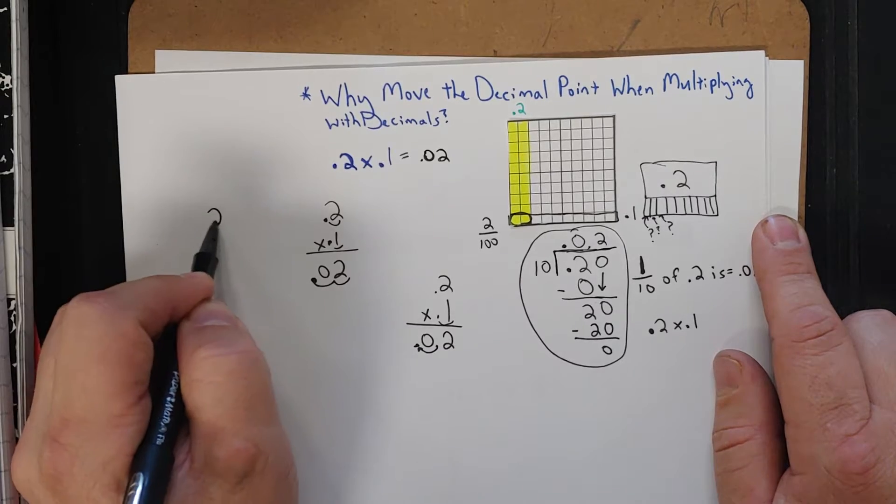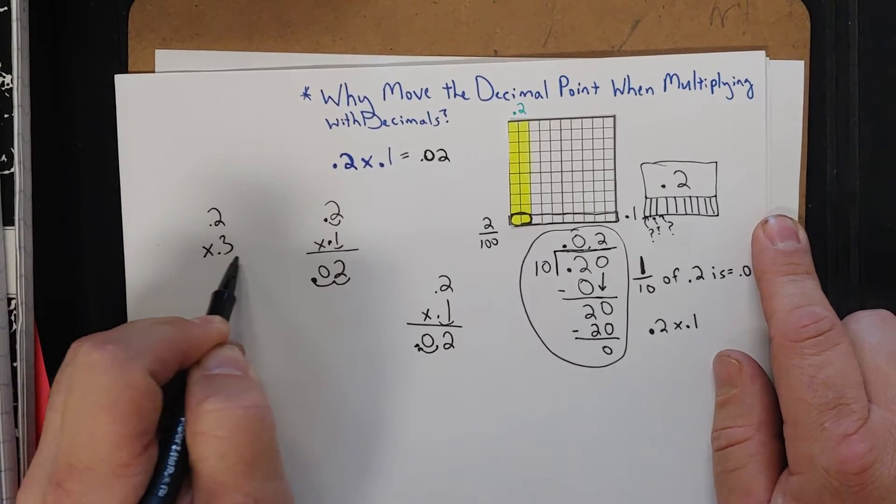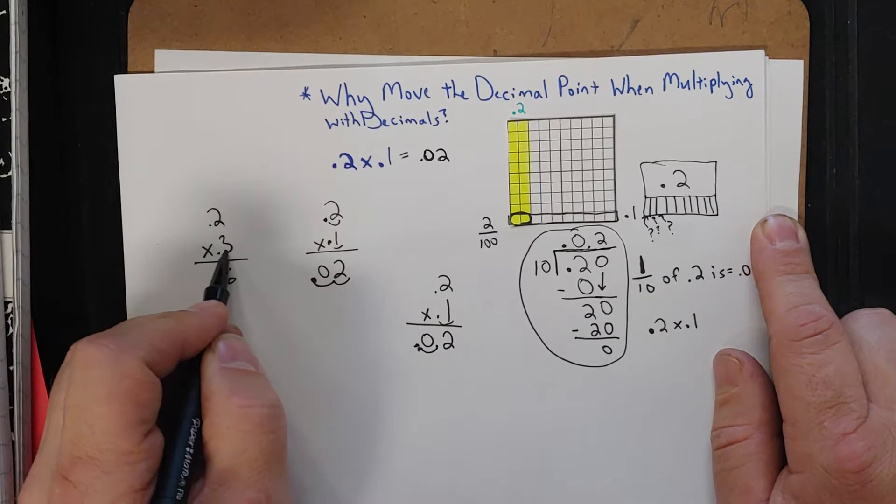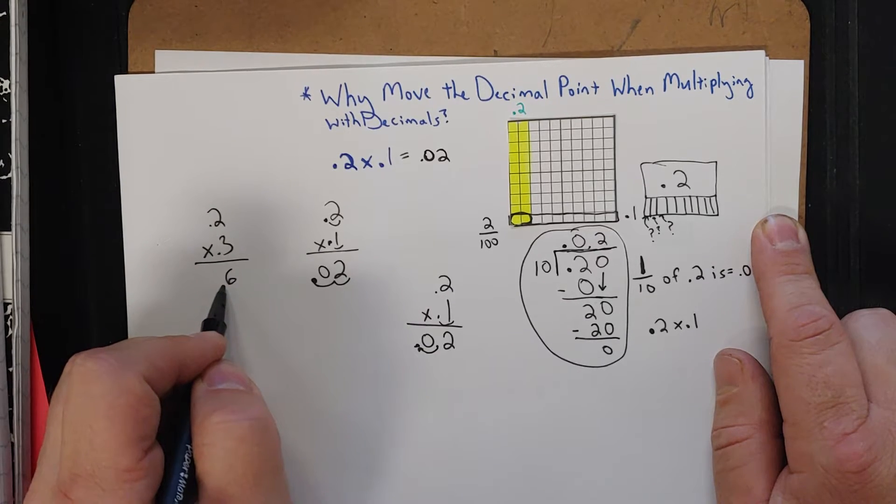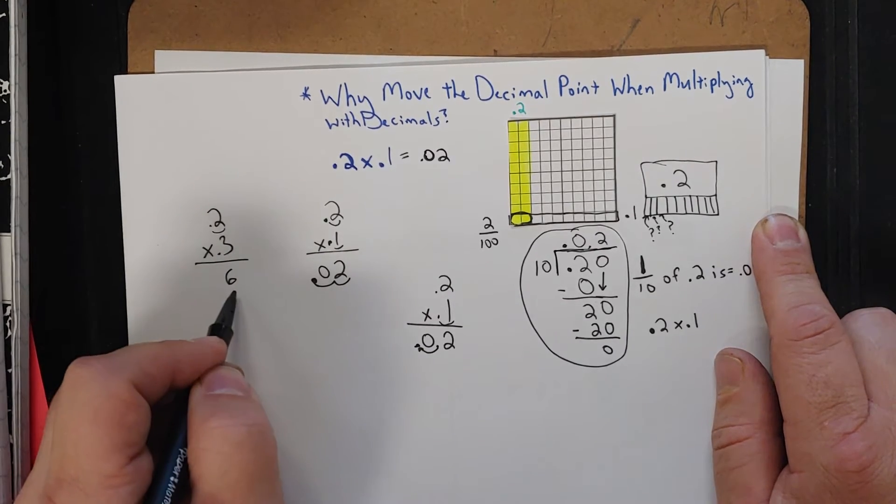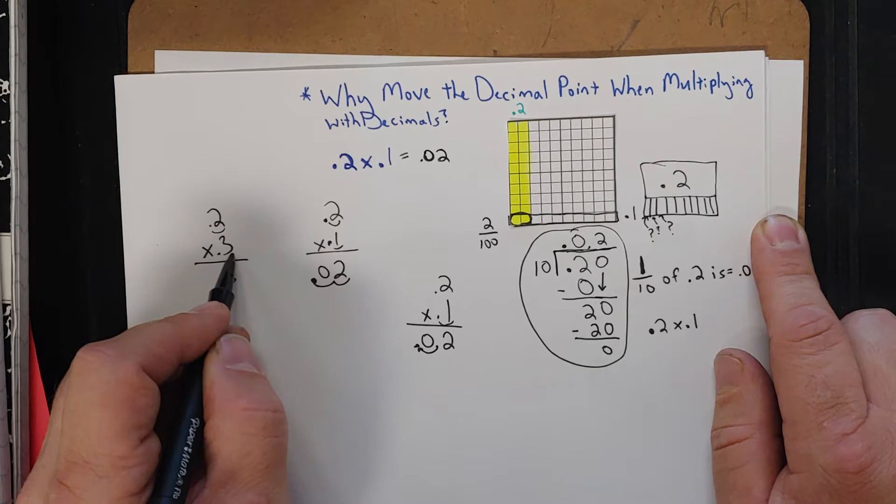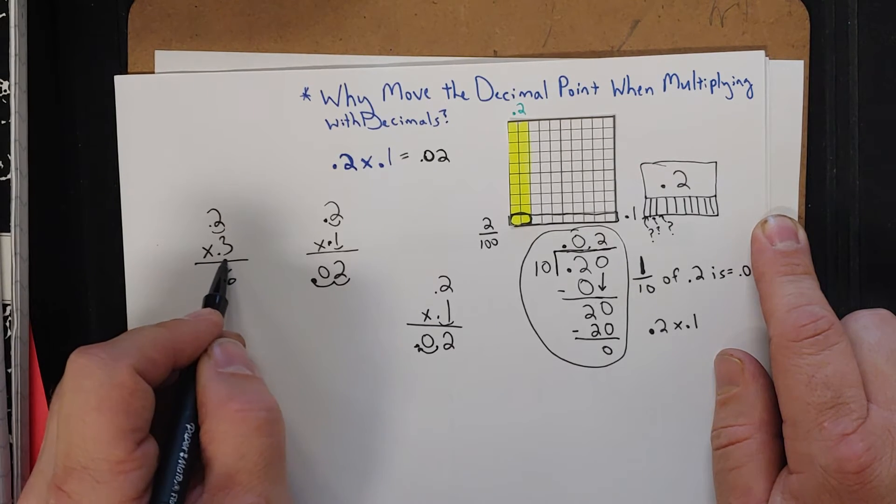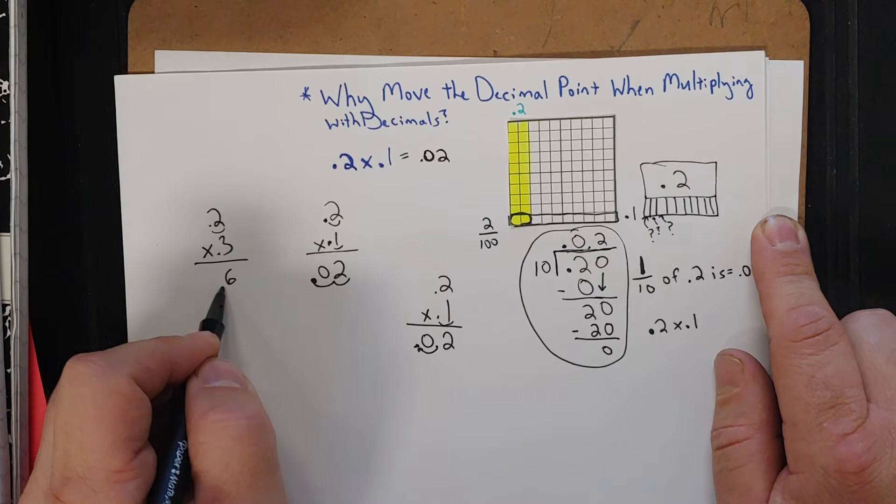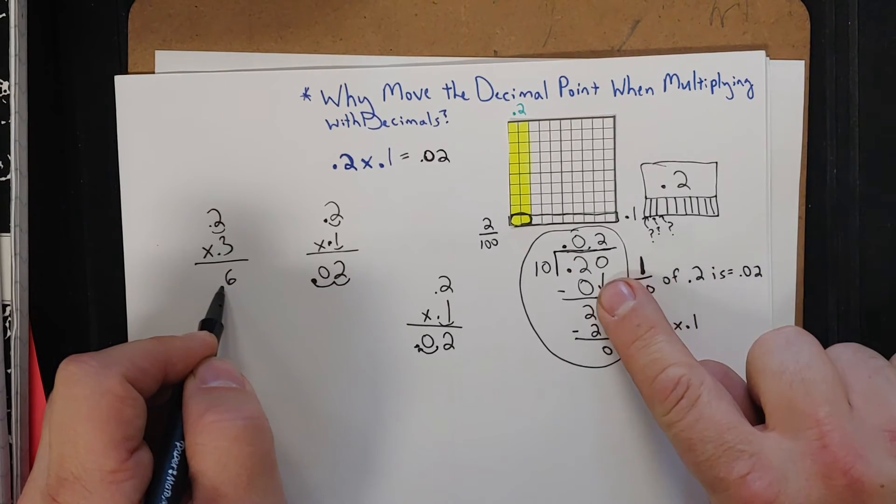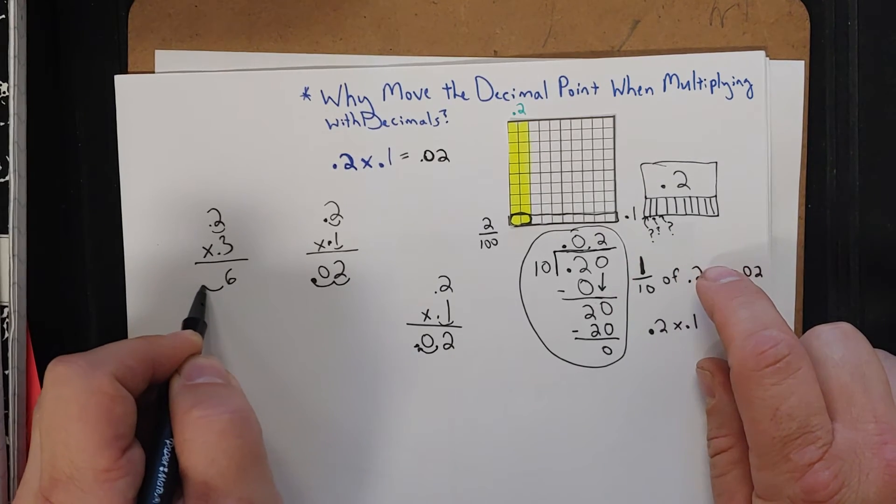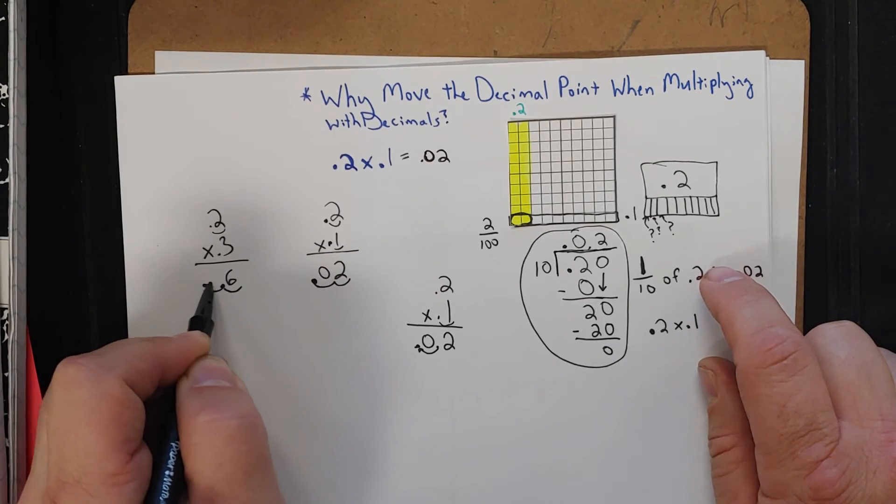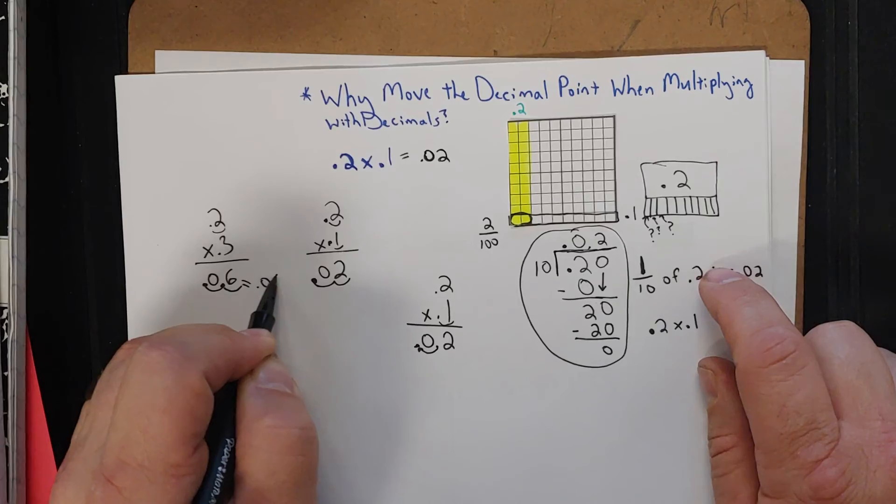So let's just do something a little different here really quick. 2 tenths times 3 tenths. Well, 2 times 3 is 6. We were taking 3 tenths groups of 2 tenths. So let's say that should have been our decimal here already, right? So 1 decimal. But then we are also multiplying by not 3 whole groups, but a tenth of 3 groups. So that's 3 tenths. So the decimal would have originally been here, but we need to divide by 10 again, like we did over here. Moving that decimal one more time over. So we had the decimal over once, then we moved it over because we divided by 10 one more time, which got us 6 hundredths.